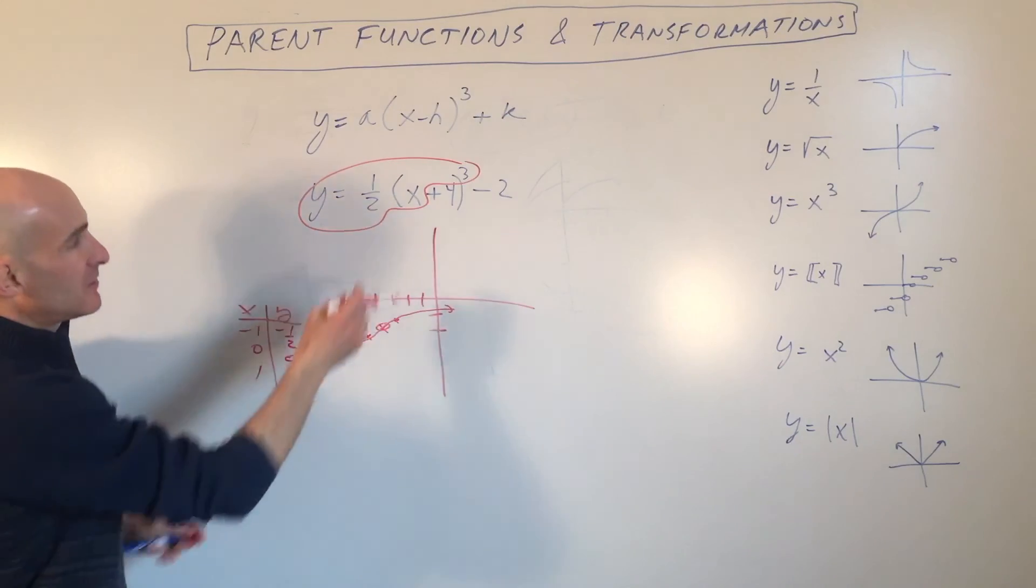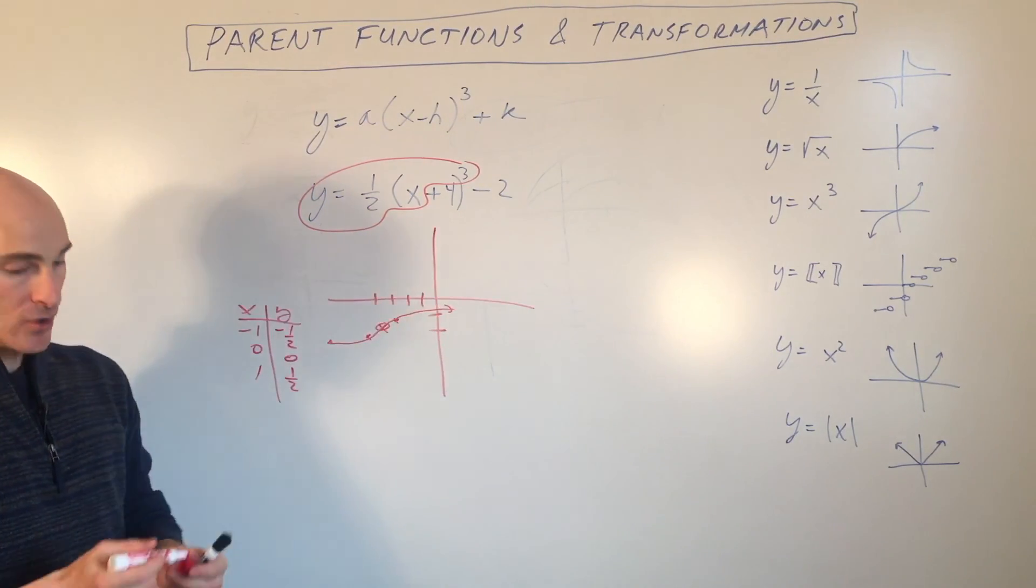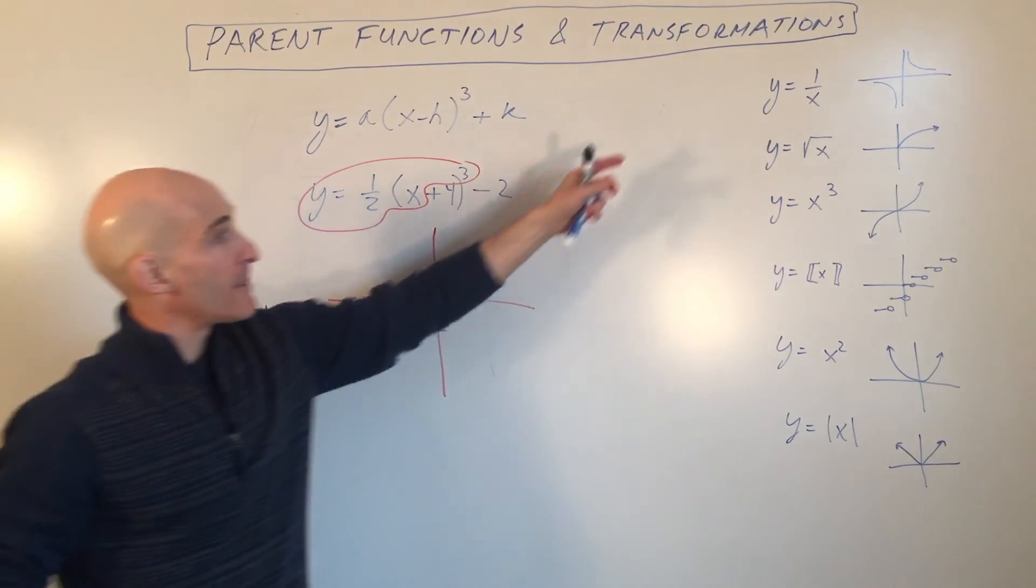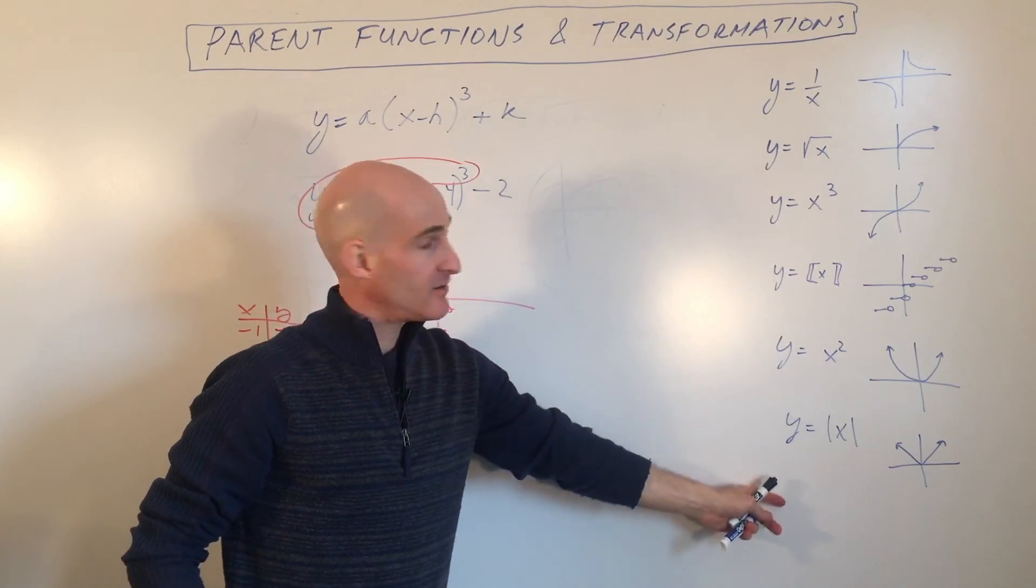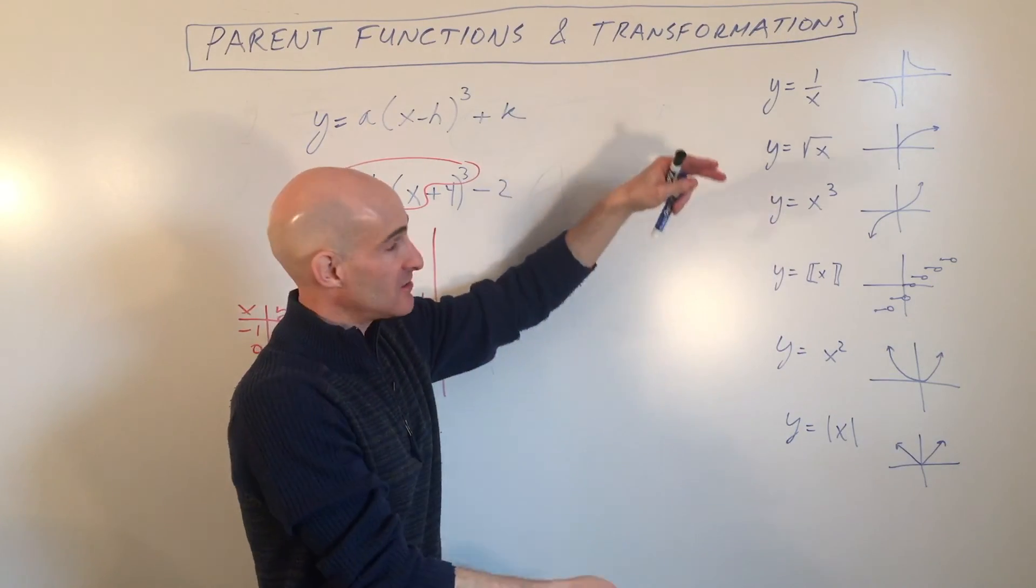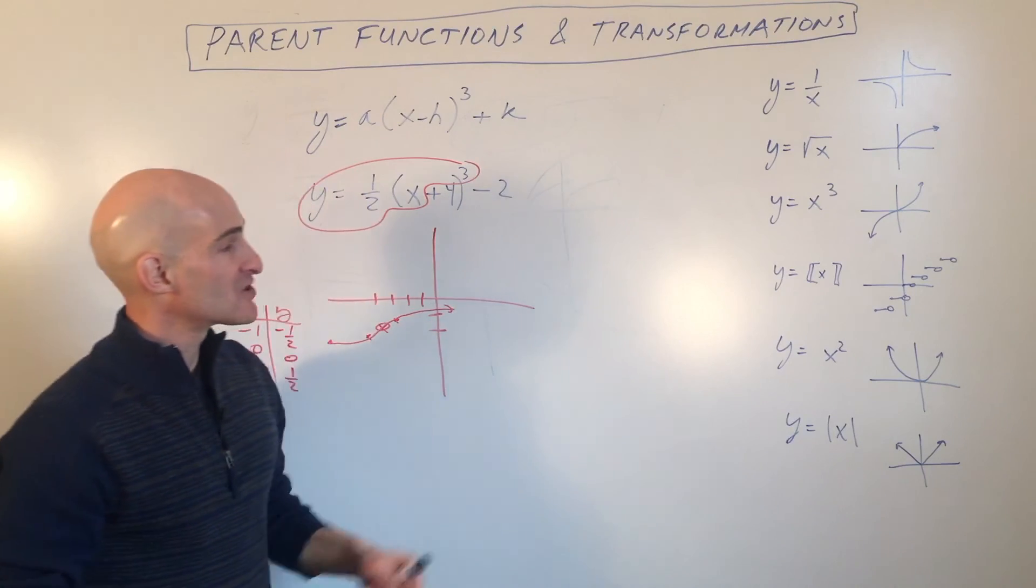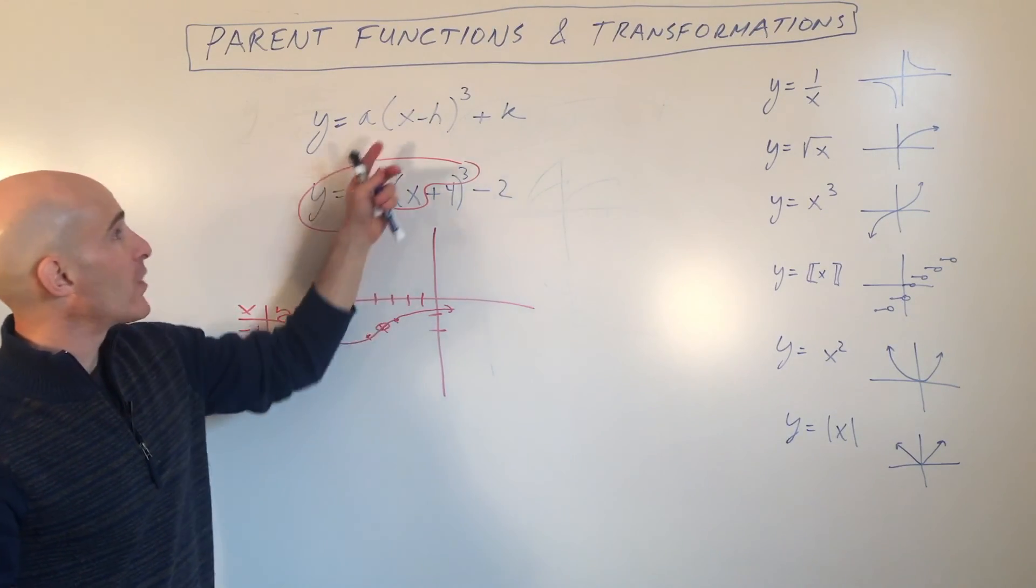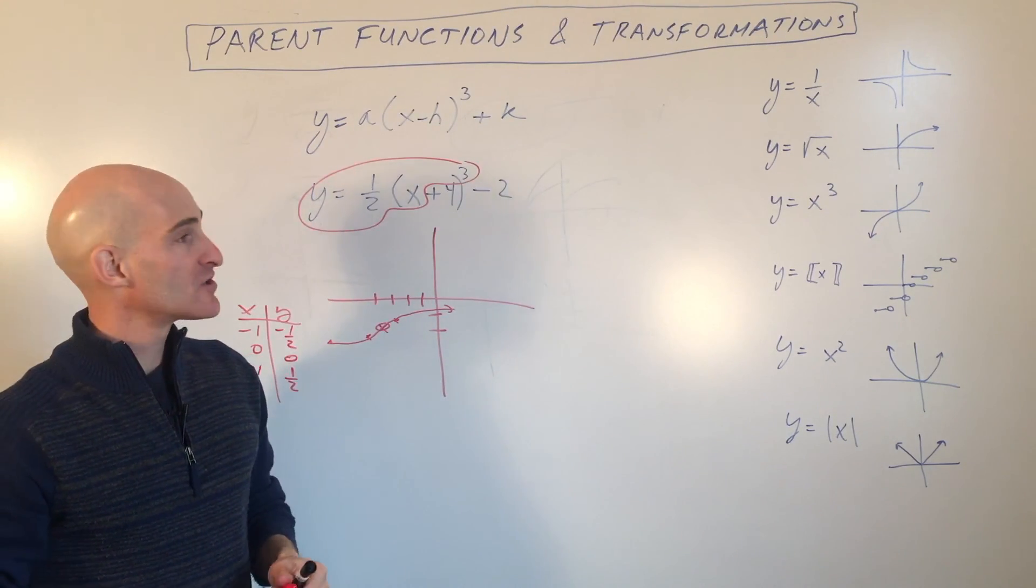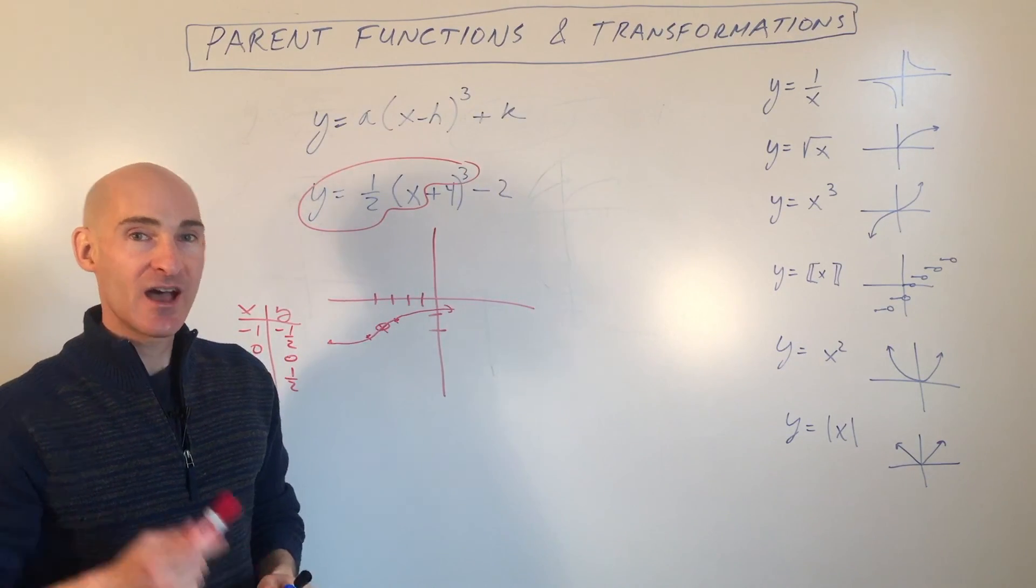So the half compressed it. The 4 shifted it left 4. And the negative 2 shifted it down 2. So you can do this with any parent function. You can stretch it and compress it. And you can shift it left and right, up and down. Just think of it in a more general way like we've been doing these other ones. So this has been an introduction to parent functions and transformations. I'll see you in the next video.